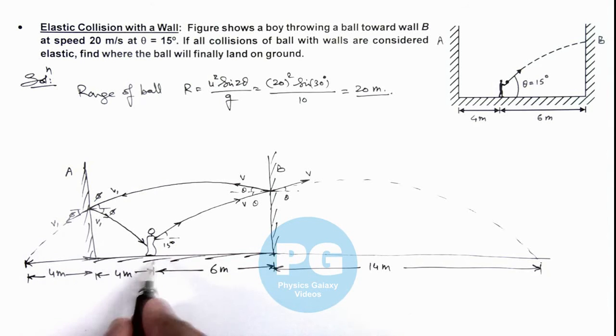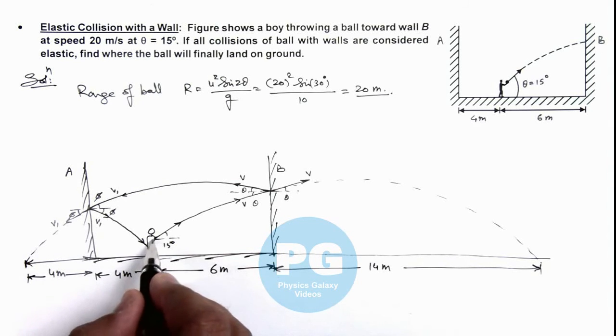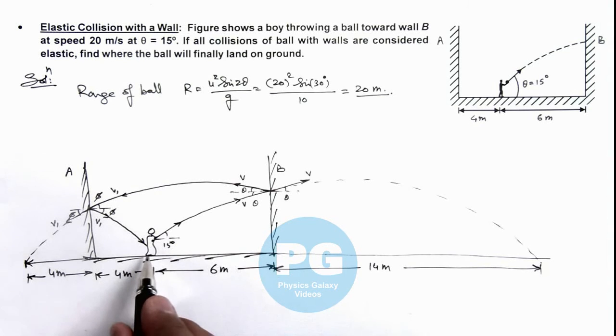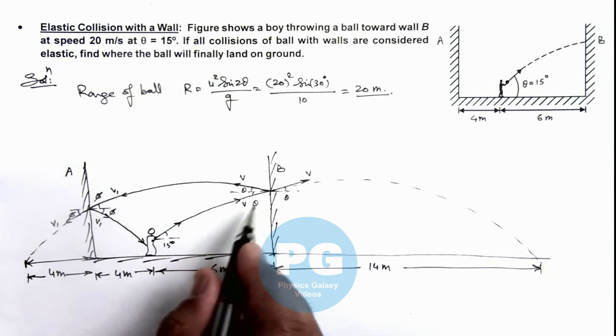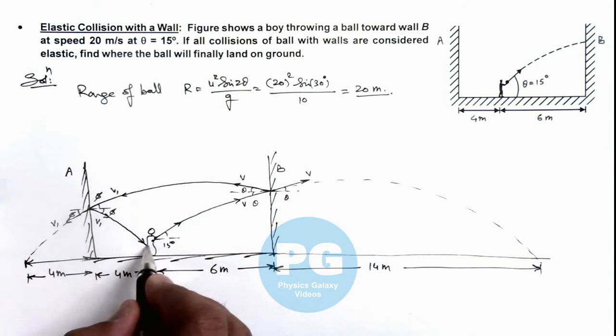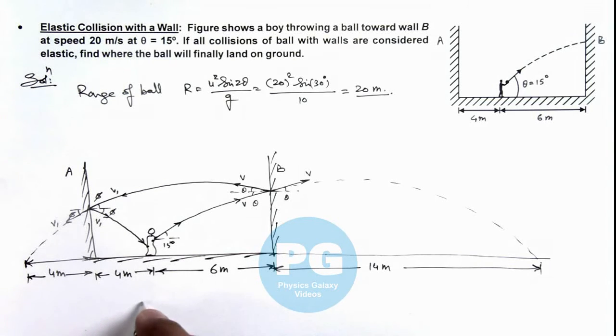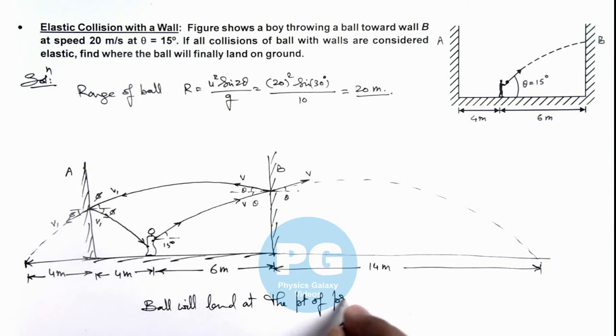From the wall A in front of it. That means the boy, the initial location from which the boy threw the projectile, finally the ball will land at the same point. So we can say, based on this analysis, that ball will land at the point of projection after 2 collisions.